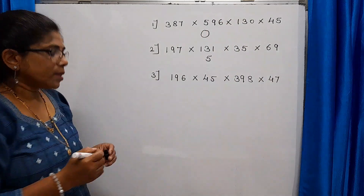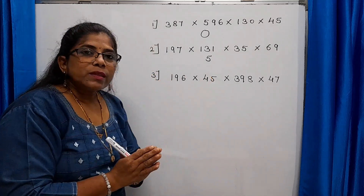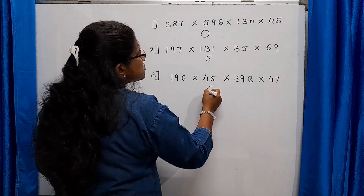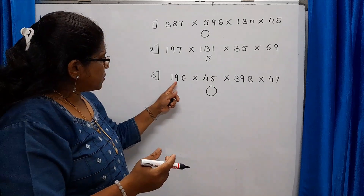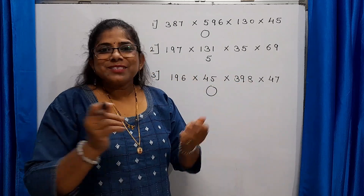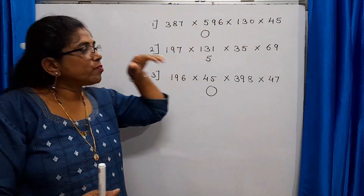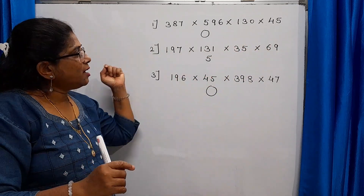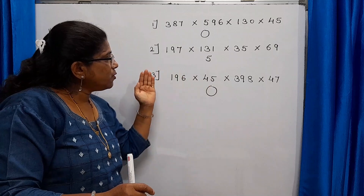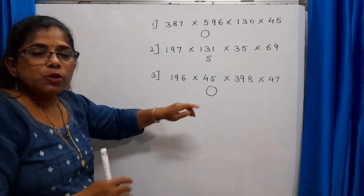Last tip: consider 196 × 45 × 398 × 47. If the digit in the units place of one number is 5, and you have one or more even numbers in the units place, the units place of the final product is 0 — because 6 × 5 = 30, giving 0, and multiplying 0 by anything stays 0. Summary: if any units place is 0, the product's units place is 0; if all units places are odd with one being 5, the units place is 5; if one units digit is 5 and there's at least one even units digit, the product's units place is 0.